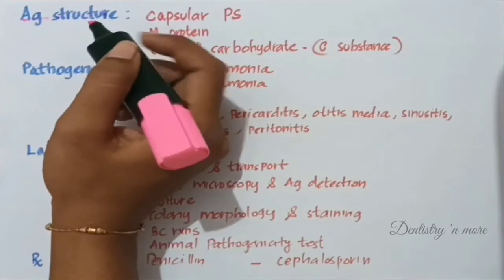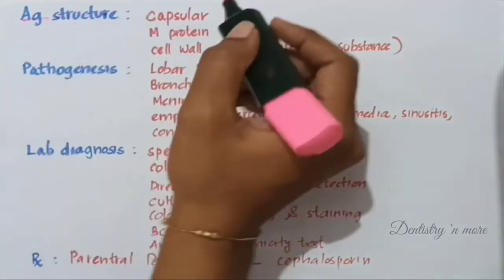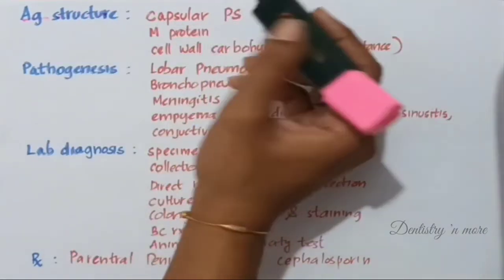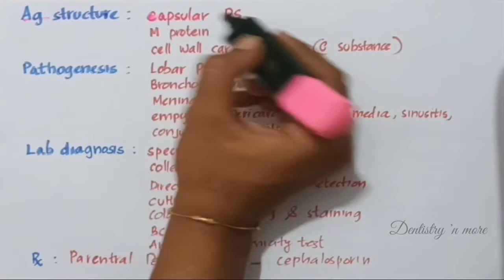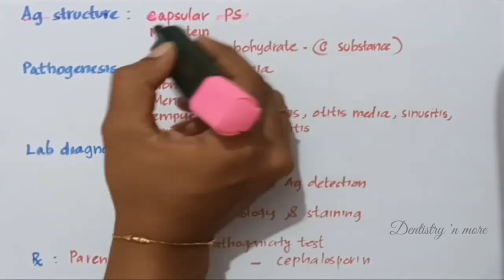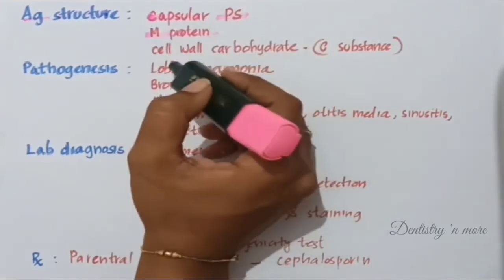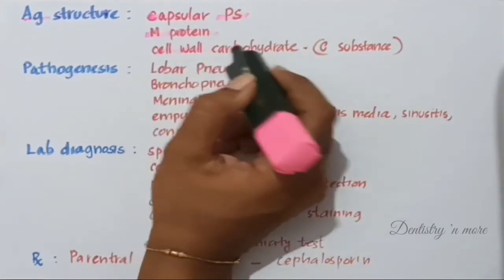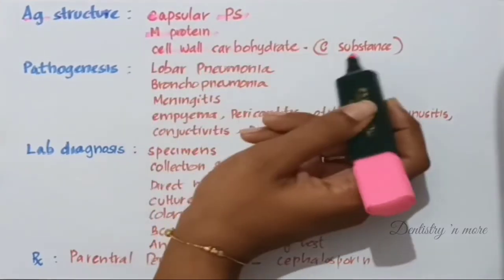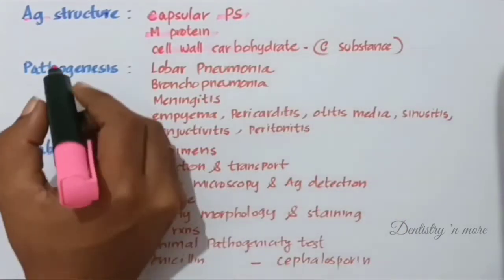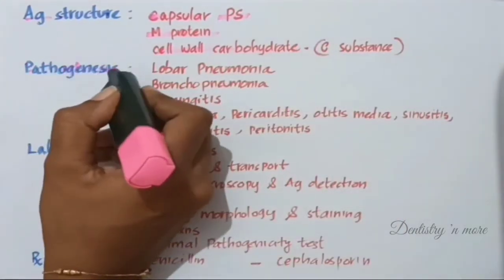The most important antigen of the pneumococcus is the capsular polysaccharide, followed by M protein and cell wall carbohydrate, which is also called the C substance.